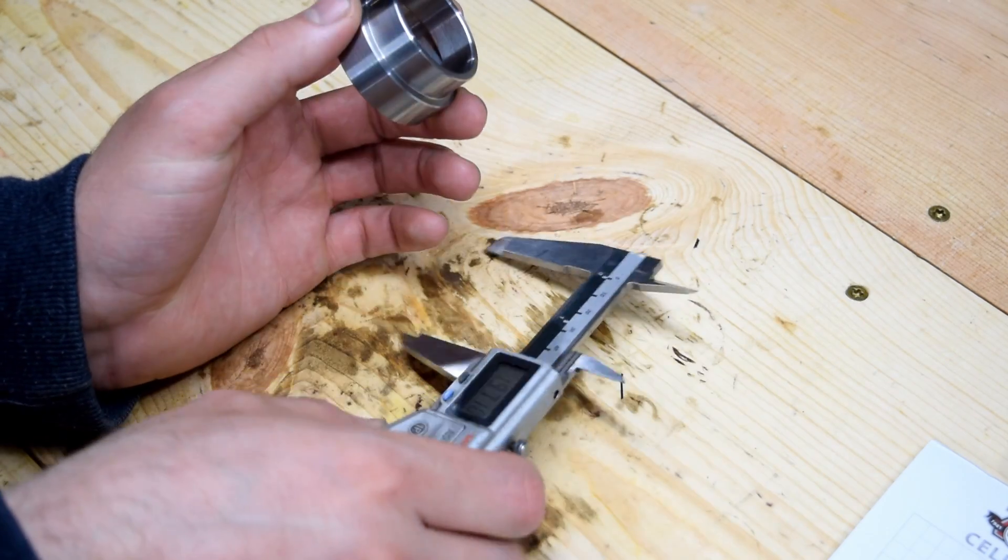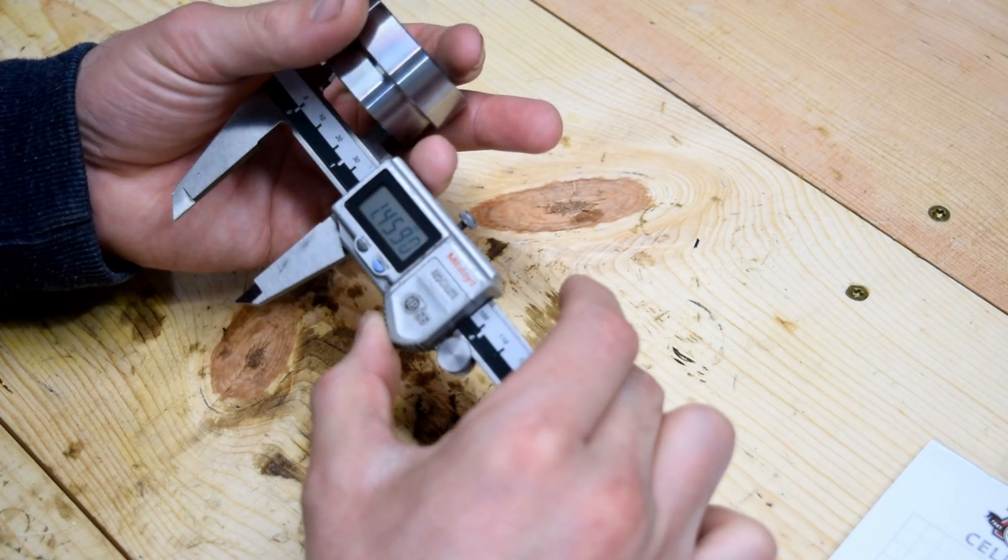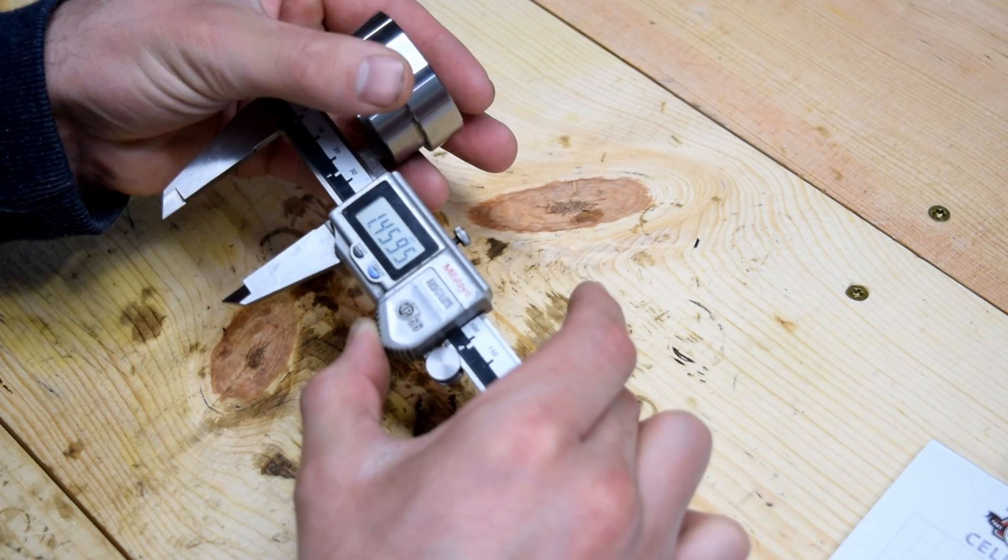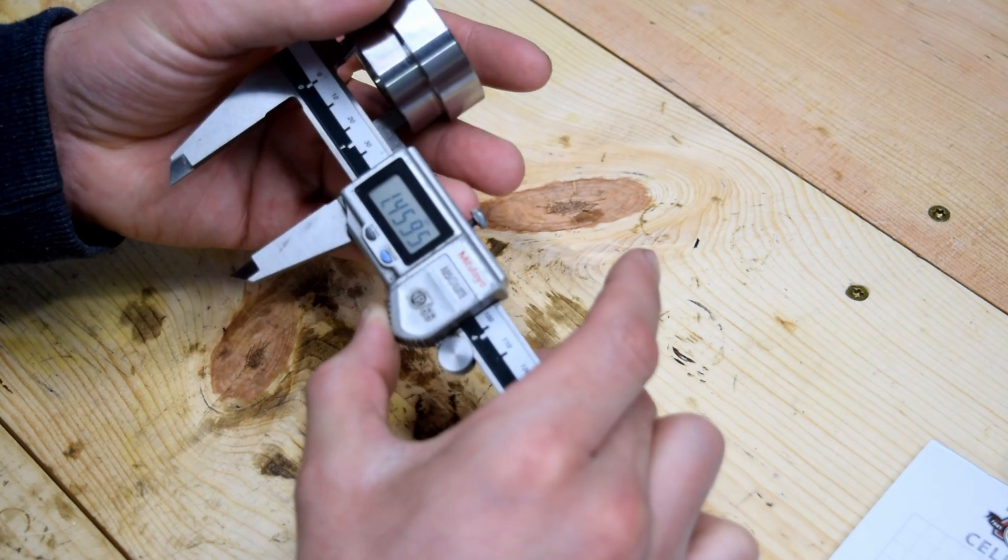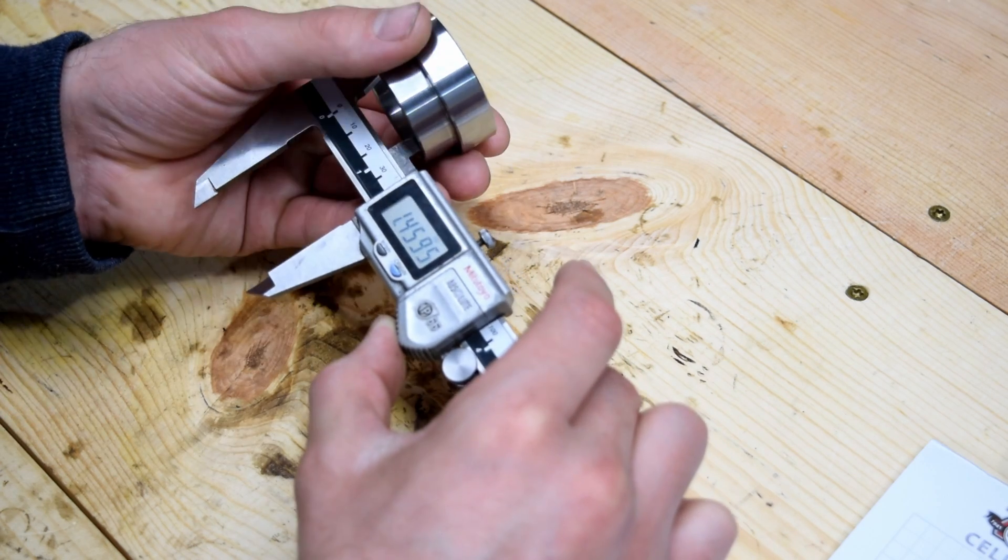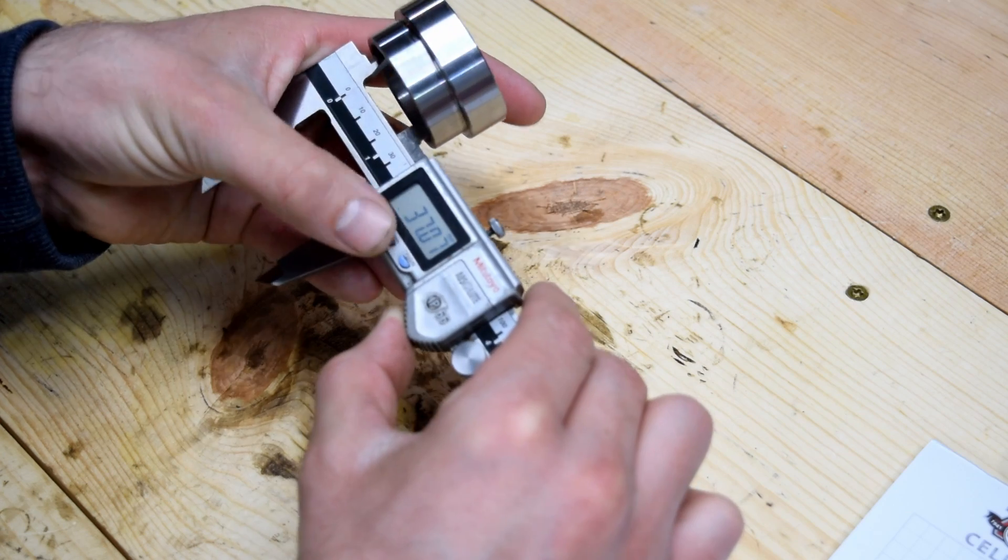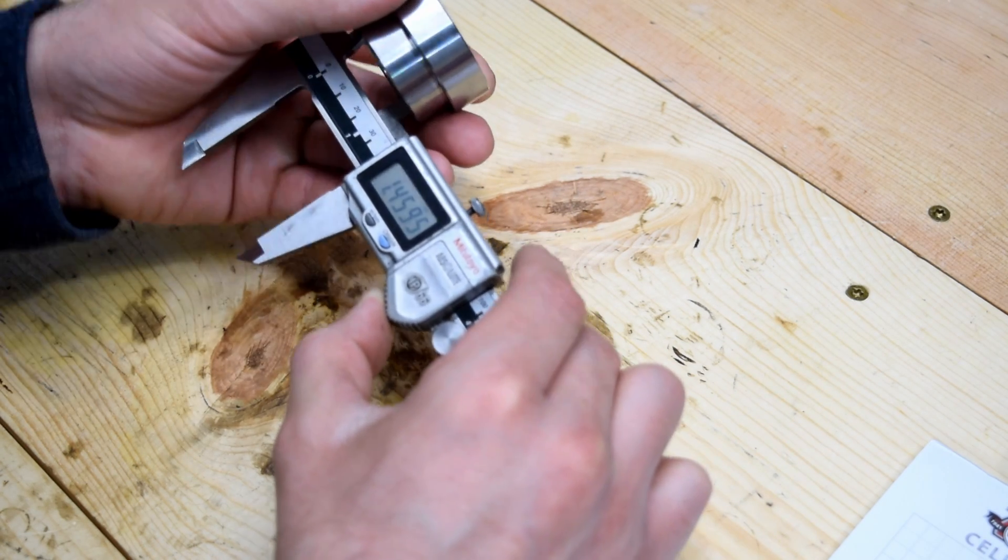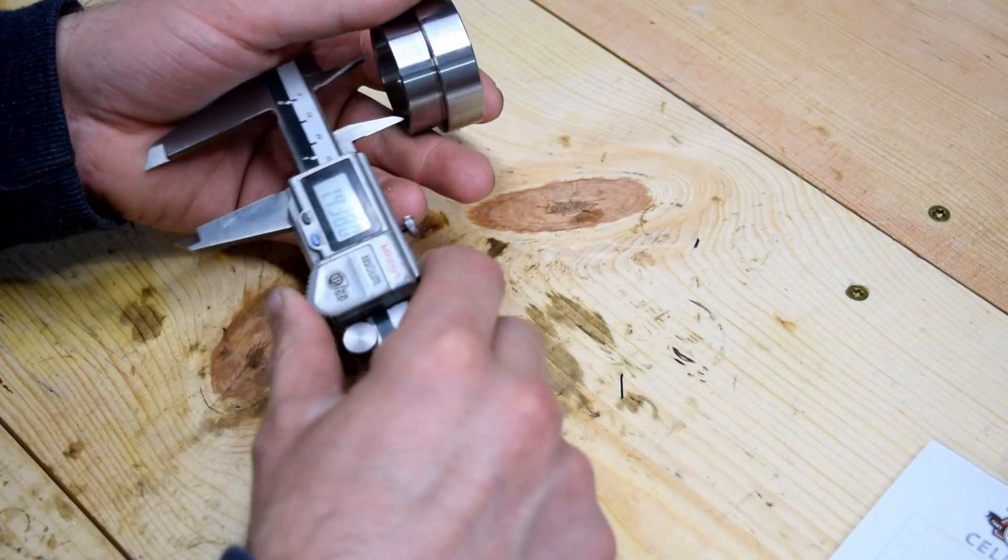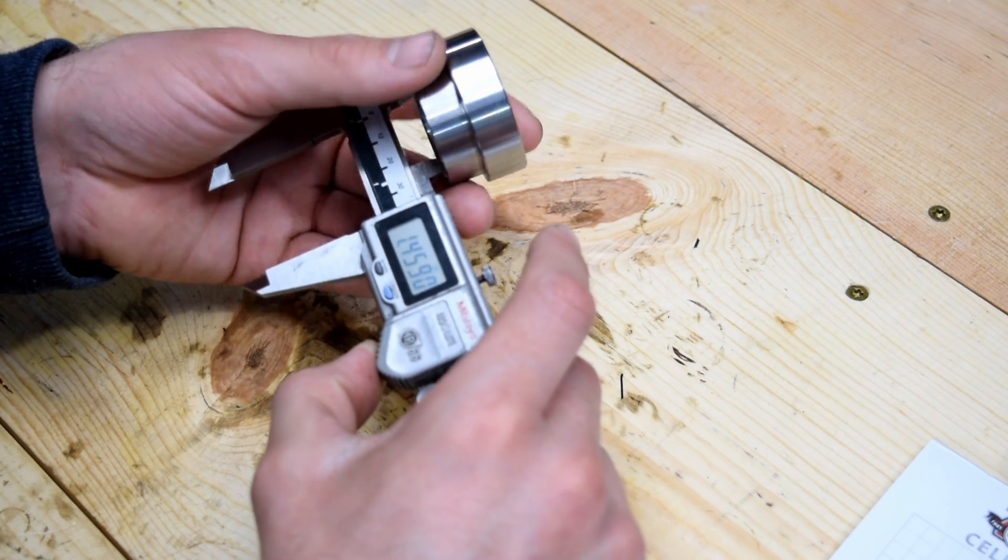Let's see, next measurement. We'll do inside diameter of the small end. Looks like 1 inch 500, or not 500, 460. I don't know what that is in metric, 37. I'm pretty sure the